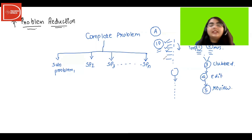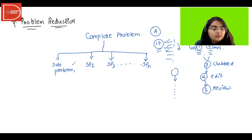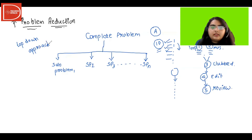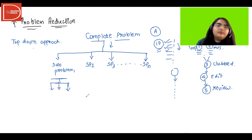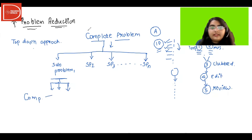You're already using problem reduction in your daily life, and that is what a computer does as well. It works on the principles of a top-down approach. You take the first problem, divide it, and then if sub-problem one needs further division, you divide it again into even smaller chunks. That is how you reduce problems.